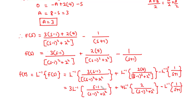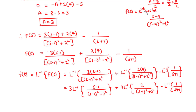The first transform corresponds to the form (s - a)/[(s-a)² + b²], whose inverse Laplace transform is e^(at)·cos(bt). Comparing, we have a = 1 and b = 2, so the first term gives 3·e^t·cos(2t).